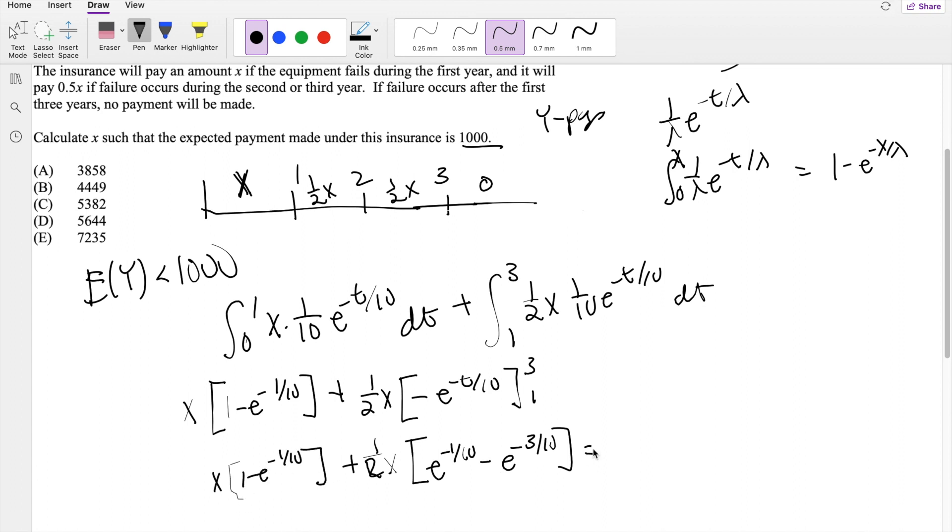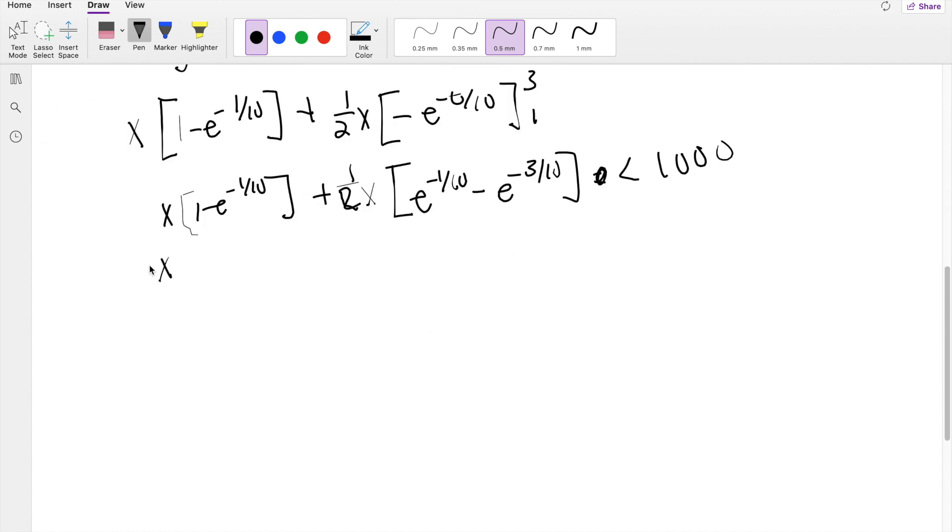And this has to be less than or equal to $1,000. 1 minus E to the negative 1 tenth is equal to 0.095.